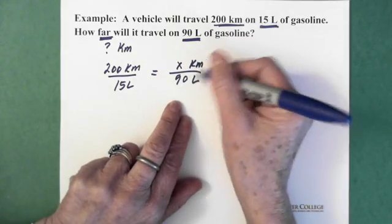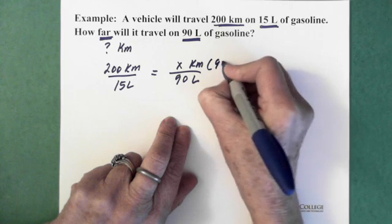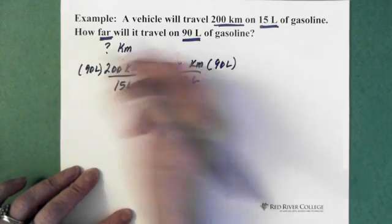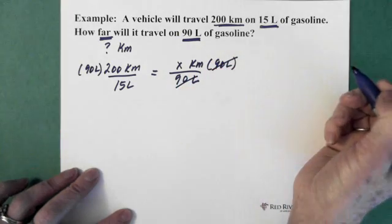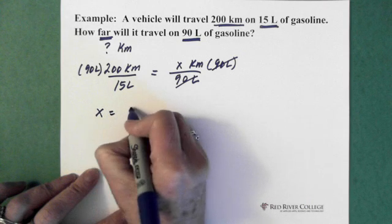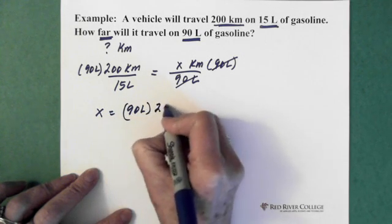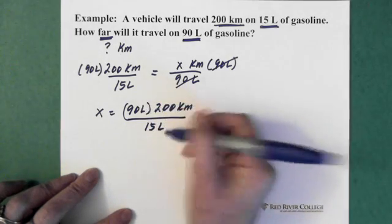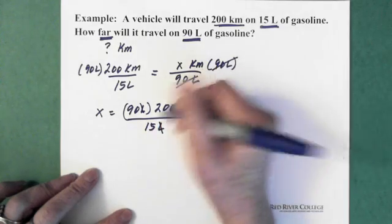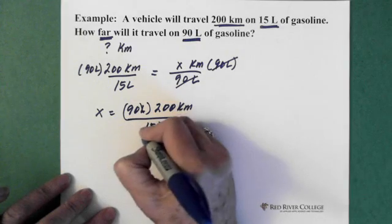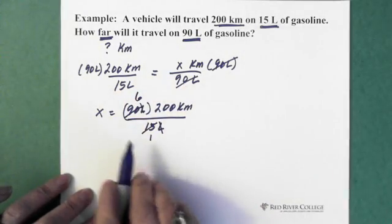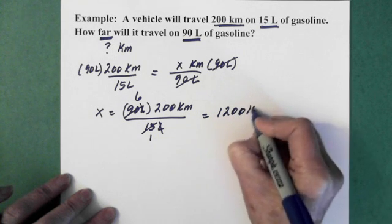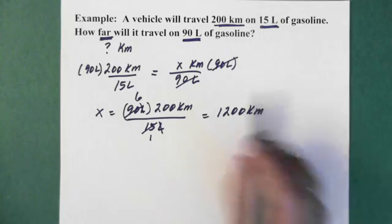And we're solving for x. So here what we're going to do is multiply this side by the 90 liters. We multiply here by 90 liters. We have to multiply on this side by 90 liters. Those two become one. So then we're left with x equals 90 liters times 200 kilometers divided by 15 liters. Now 90 divided by 15 is 6. So there's a 1, there's a 6. And now we have 6 times 200 kilometers. So then x equals 1200 kilometers. And that's the distance that you would travel on 90 liters of gasoline.